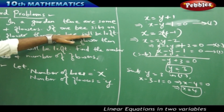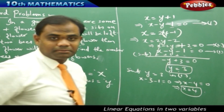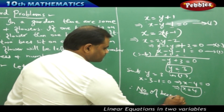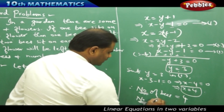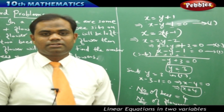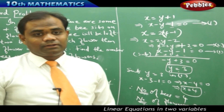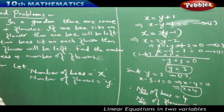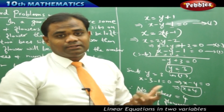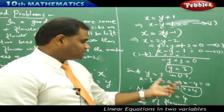Therefore, there are 4 bees and 3 flowers in the garden, satisfying both conditions. This is how we understand linear equations in real-life situations — examine the word problem carefully, convert to linear form, then find the solution algebraically or graphically.